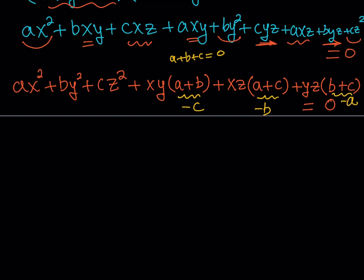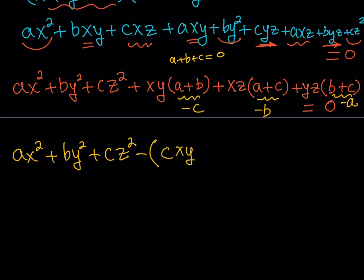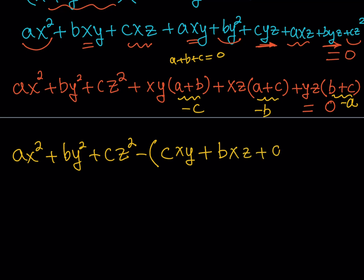Let's make the substitution. This gives us ax squared plus by squared plus cz squared — which is what we're looking for — plus, with a global minus sign, everything else becomes: negative cxy, negative bxz, and negative ayz. And this whole thing is equal to zero.